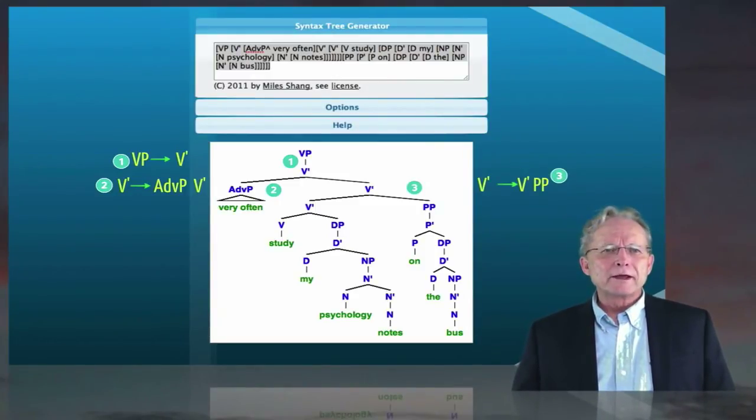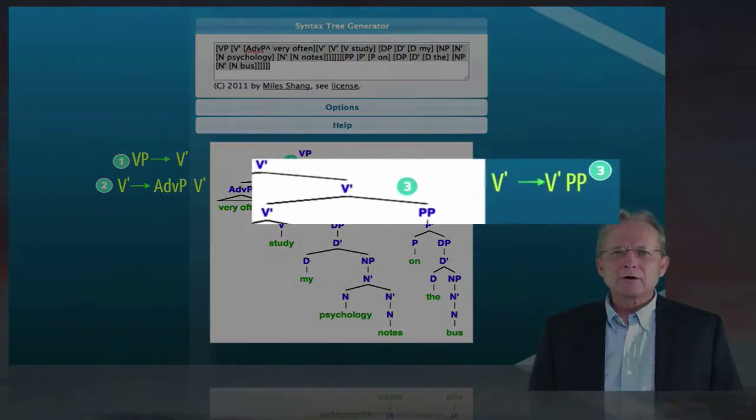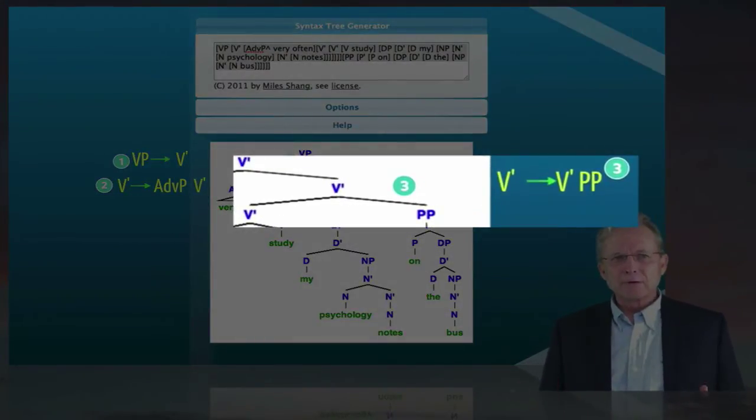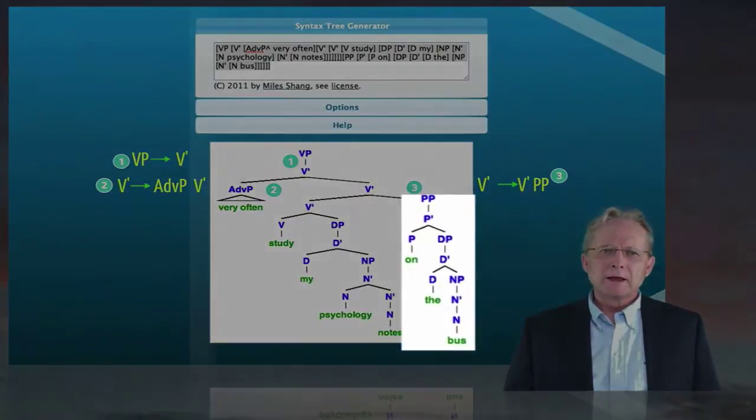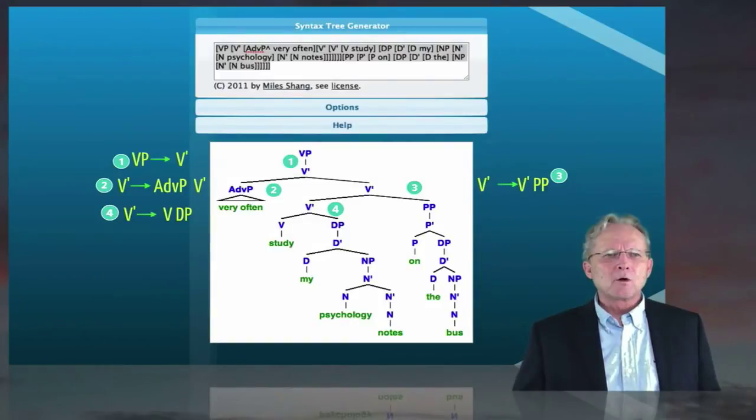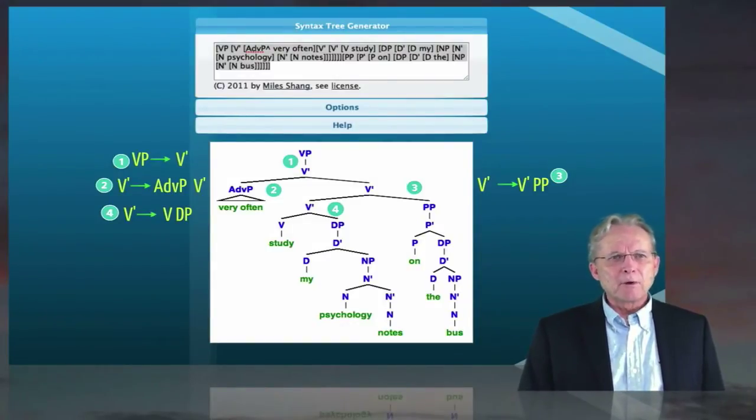And then we can also add another layer by putting another V bar within the V bar that exists there. And this time we'll put it together with a prepositional phrase or PP on the right. Going back to the V bar that we created with this,